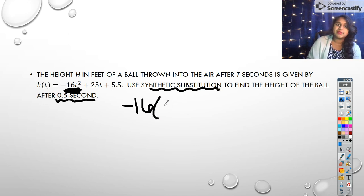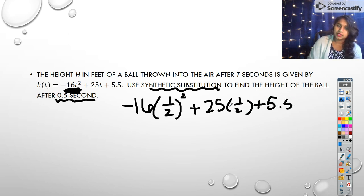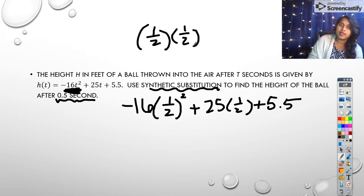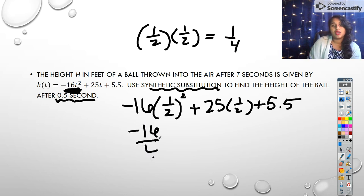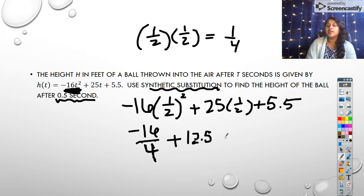So that becomes negative 16. I'm going to convert this back to one half because we're squaring it and it makes it easier to recognize what we're doing. And one half squared is the same as saying one half times one half. And I multiply across, right? So that's one fourth. So it becomes negative 16 over four, which we know is just negative four plus 25 over two is 12.5 plus 5.5.